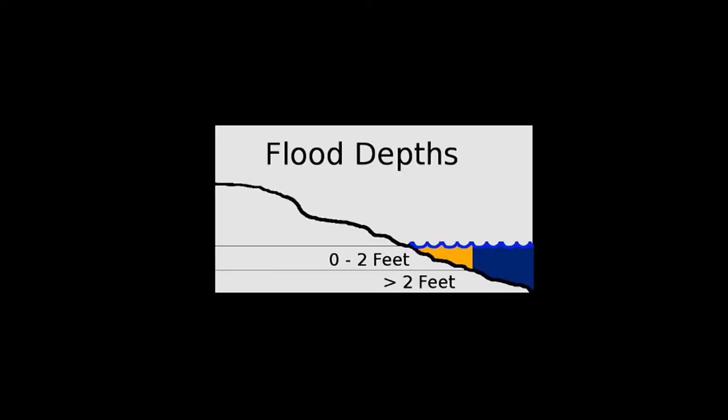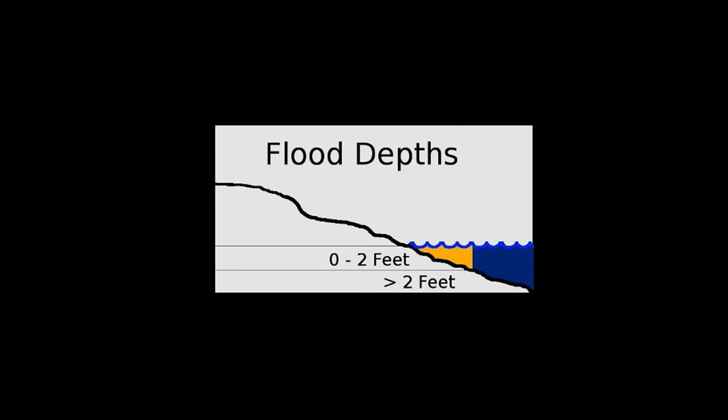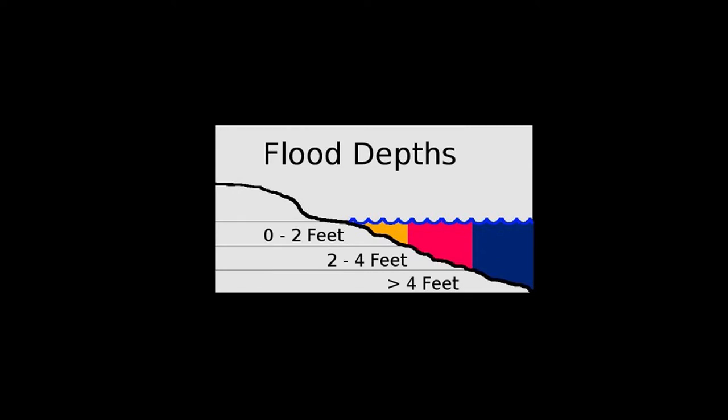On the maps I'll show, areas in pale yellow indicate flooding of up to two feet of water. The red areas depict two to four feet of flooding. The mustard color areas represent flooding of four to six feet, and the dark blue areas represent the areas of deepest water without regard to a specific depth.